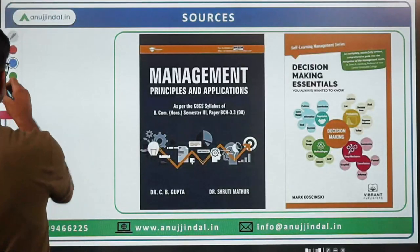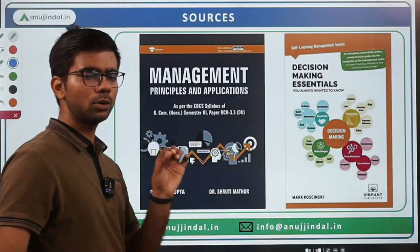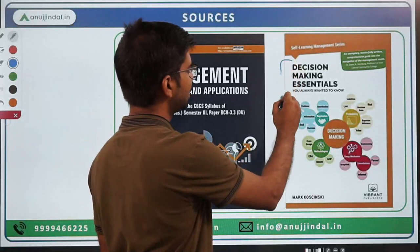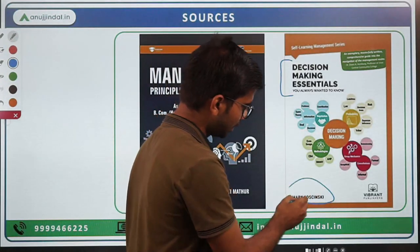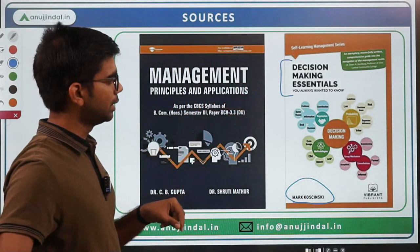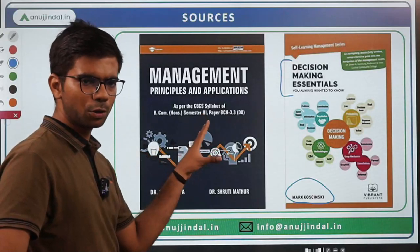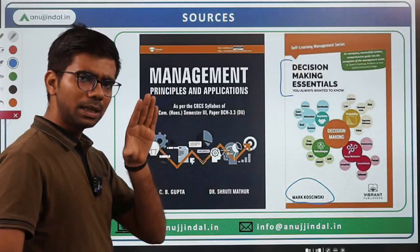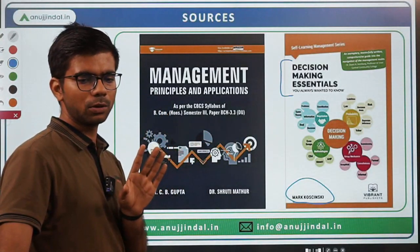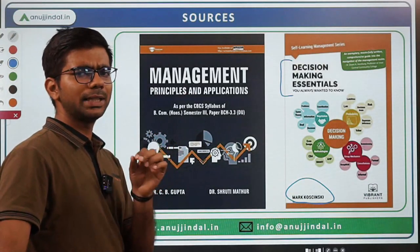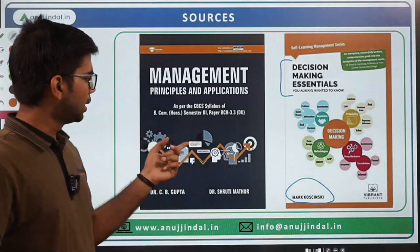Now, if I talk about sources from which you can cover decision making — these are two books I found useful. One book is 'Decision Making Essentials,' easily available on Amazon for around 500 rupees, by Vibrant Publishers. It covers decision making theories, techniques, and other topics I showed in the last slide. In any good basic management book you will also find a chapter on decision making — for example, a book by Dr. C.B. Gupta — which covers types of decisions, techniques, and more topics.